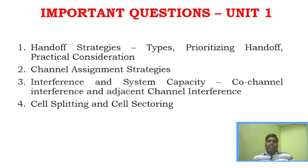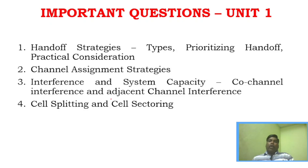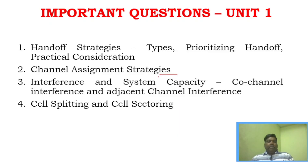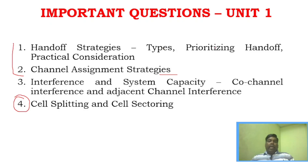Now for important question discussion. Unit 1 has four definite questions. The strategy is: if you learn four questions per unit, you will pass; if you skip questions, you will be in trouble. The important questions in Unit 1 are: handoff strategies (very important and easiest), channel assignment strategy, cell splitting and cell sectoring (story-based questions), and interference and system capacity.